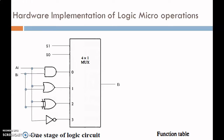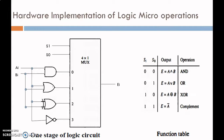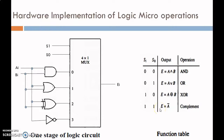The function table of one stage of logic circuit: when S1=0 and S0=0, the multiplexer performs AND operation A and B. When S1=0 and S0=1, it performs OR operation. When S1=1 and S0=0, it performs XOR operation, giving A XOR B. When S1=1 and S0=1, we get the complement of register A. This is how the logic circuit is implemented. For N bits, N stages of circuit are required.